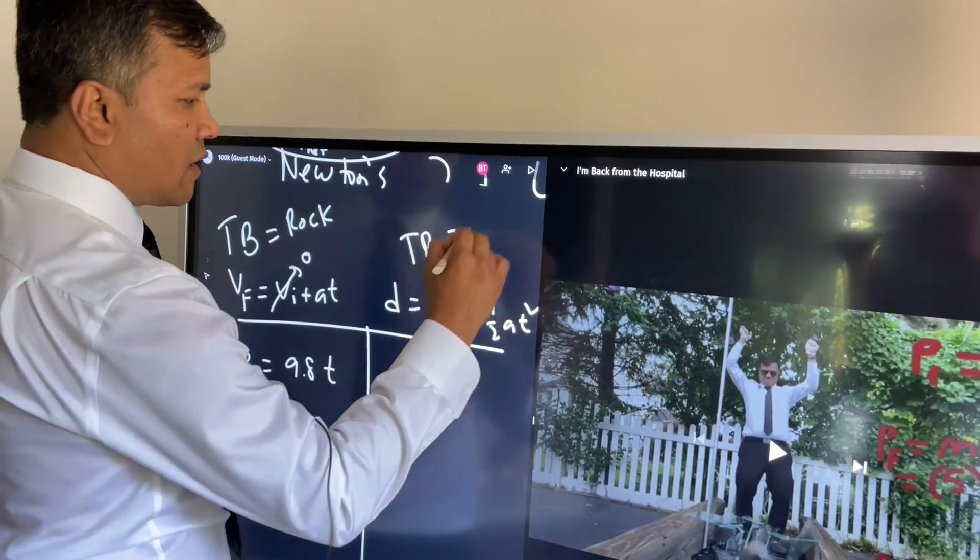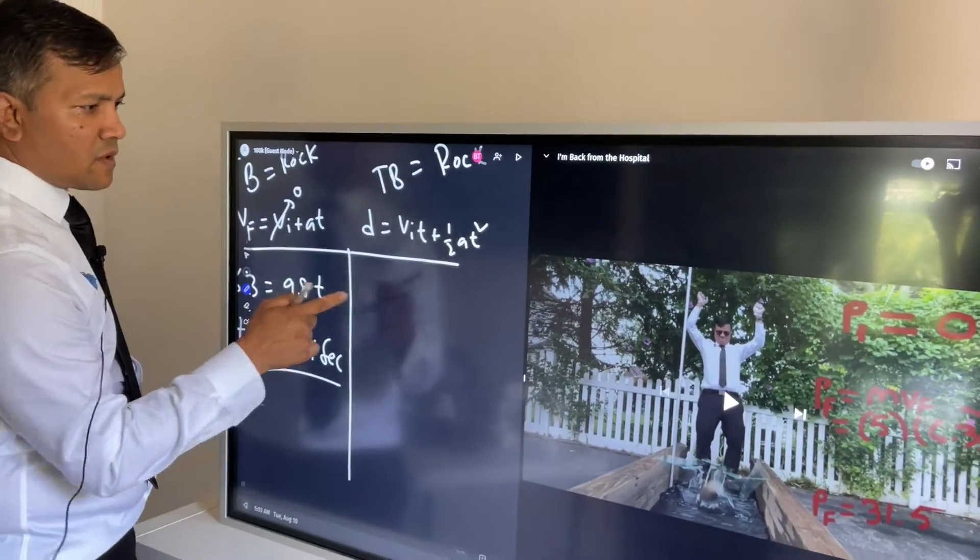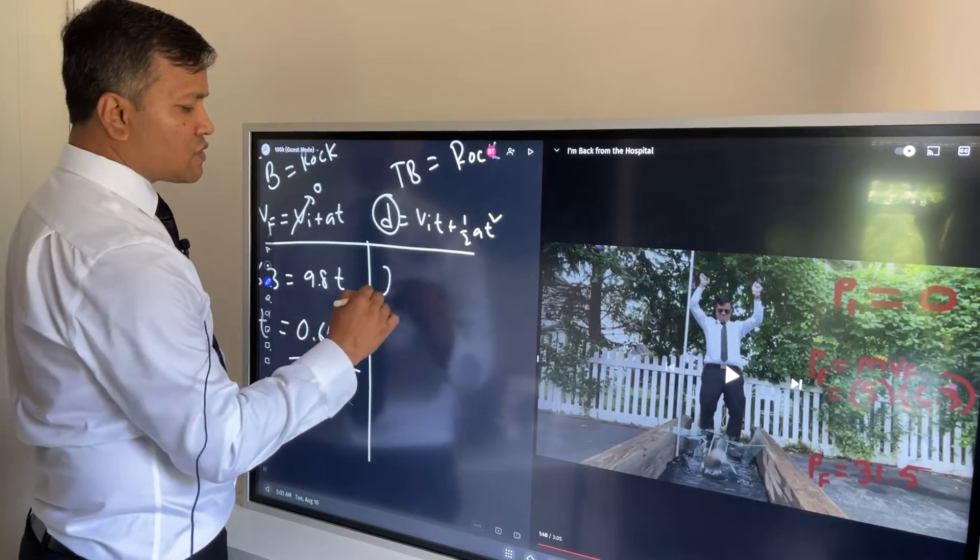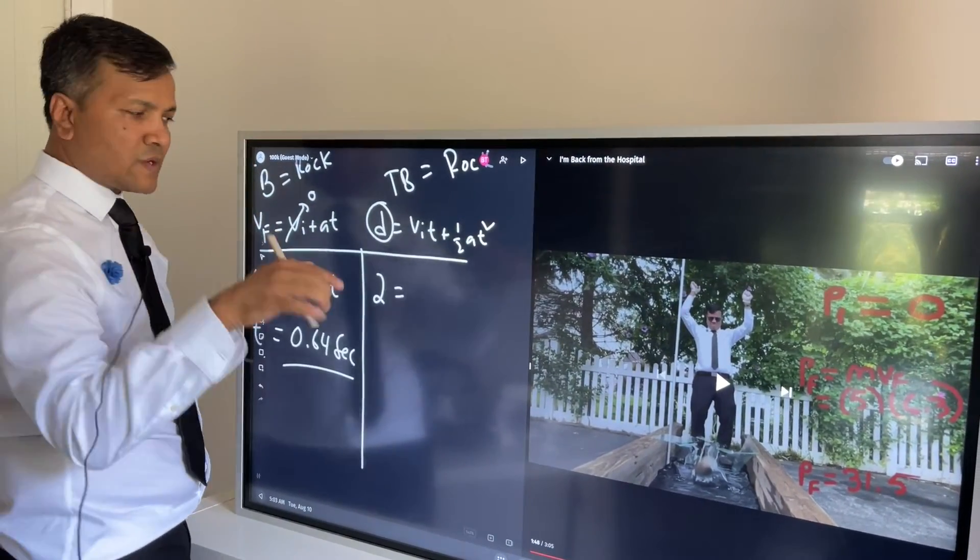This time we're going to use a different formula and see whether it gives us the same time. d is 2 meters because you drop the object from 2 meters above the ground. vi is 0 because initial velocity is 0, so d = (1/2)(9.8)t^2.